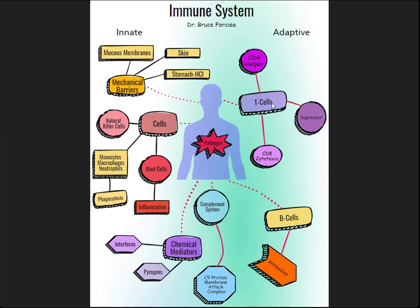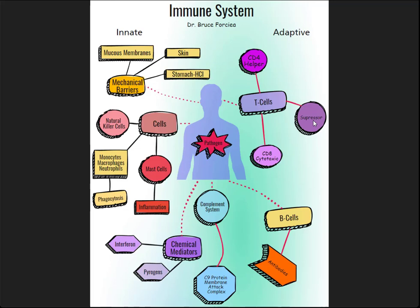The CD8s or cytotoxic T cells have a different cluster of differentiation protein located in the cell membrane called the CD8 protein. When these cells become activated, they secrete cytokines and can attack pathogens directly — that's called cell-mediated immunity. The suppressor T cells work to suppress the immune response, because the immune response can sometimes get out of control, almost like positive feedback — think of an anaphylactic reaction. So the suppressor T cells help keep that immune system reaction under control.